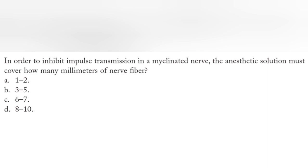In order to inhibit impulse transmission in a myelinated nerve, the anesthetic solution must cover how many millimeters of nerve fiber? Answer is 8 to 10 millimeter.